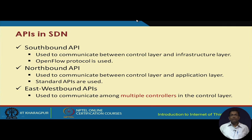In SDN, between the data plane and the control plane we have an API, and another API between the control plane and the application plane. The first one — between the control plane and the data plane infrastructure — is the southbound API, and the OpenFlow protocol is used for southbound API communication.